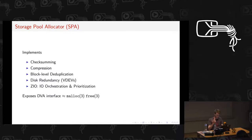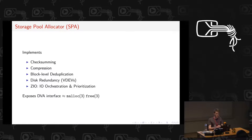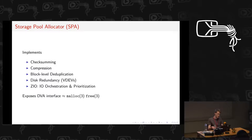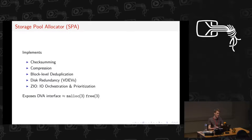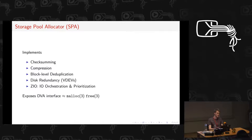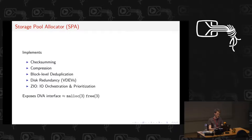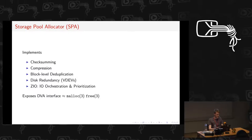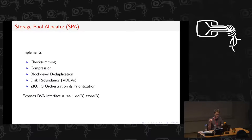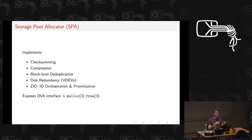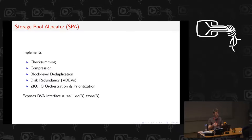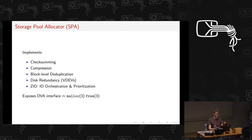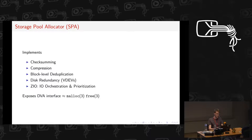The Storage Pool Allocator implements checksumming, compression, block-level deduplication, disk redundancy, and IO orchestration. Checksumming makes sense at this level. Compression is block-based, making sense here too since even metadata is compressed. Block-level deduplication and the deduplication table are also serialized at this layer. All these abstractions are exposed through an interface similar to virtual memory — you simply ask the SPA for storage of a certain size, and it allocates and distributes it according to your VDEV configuration.